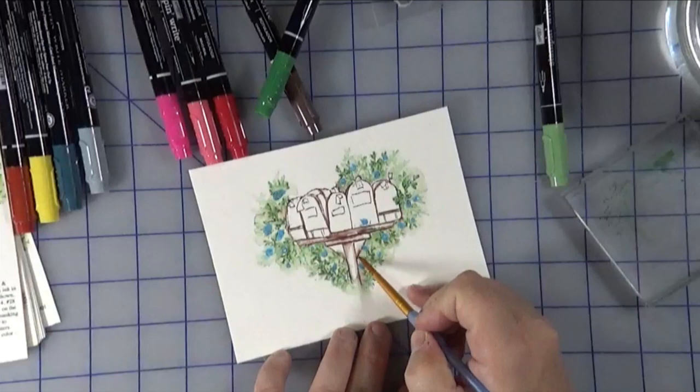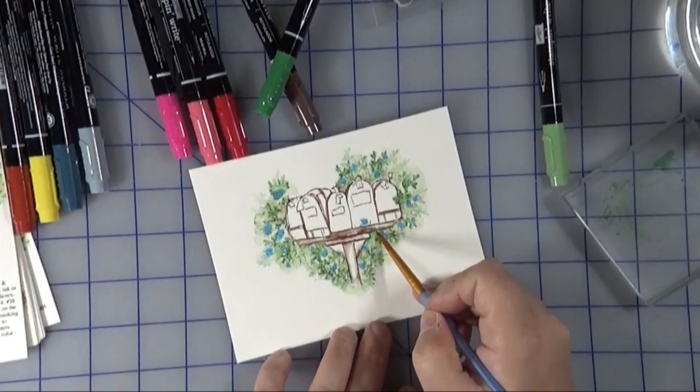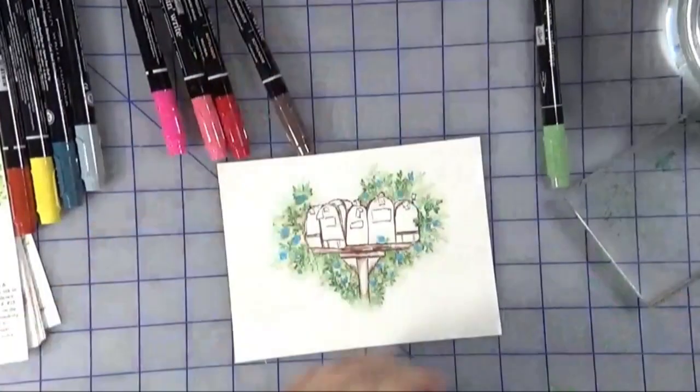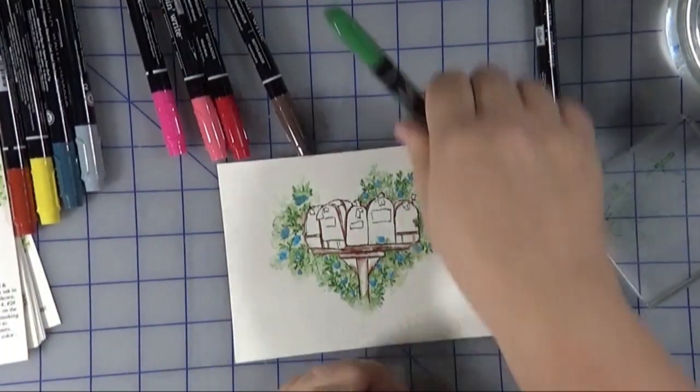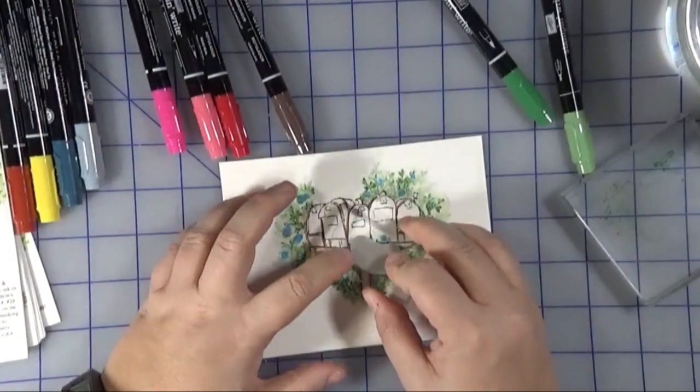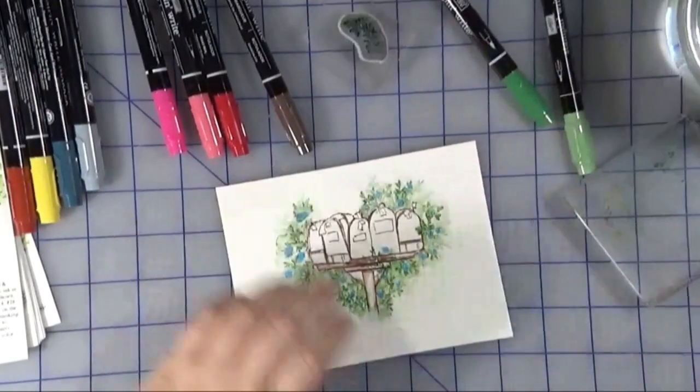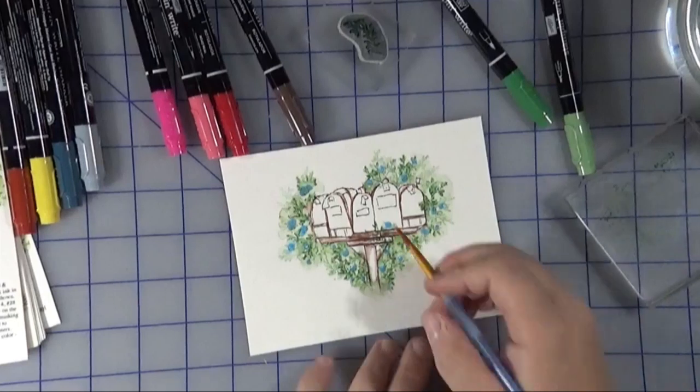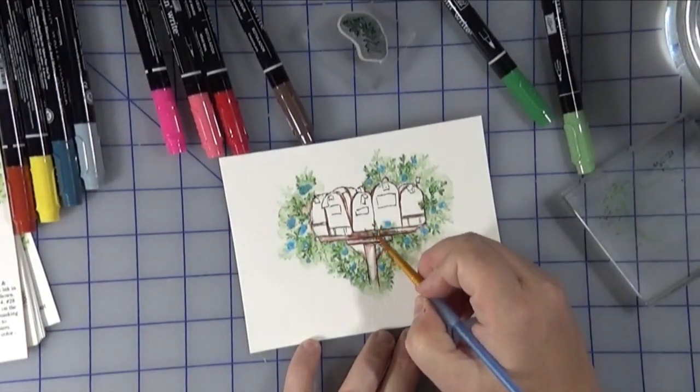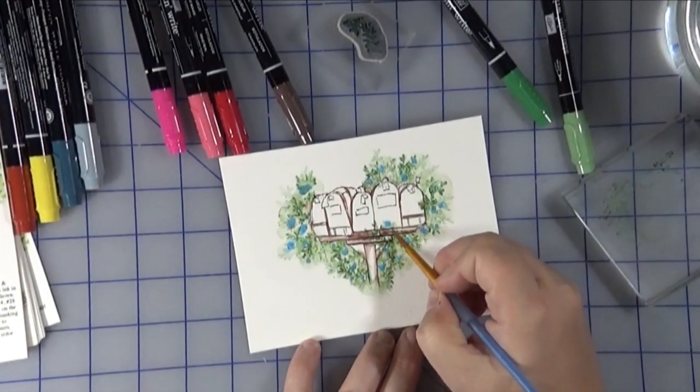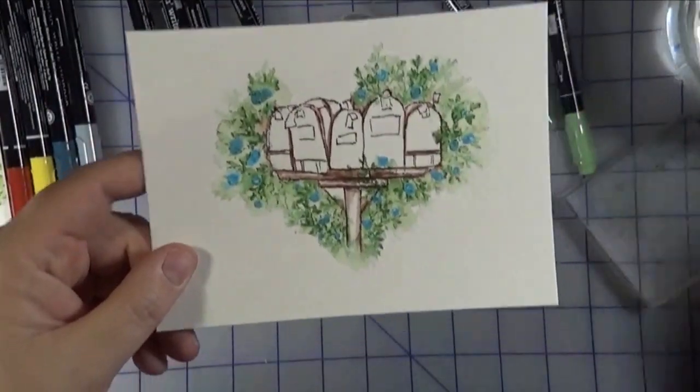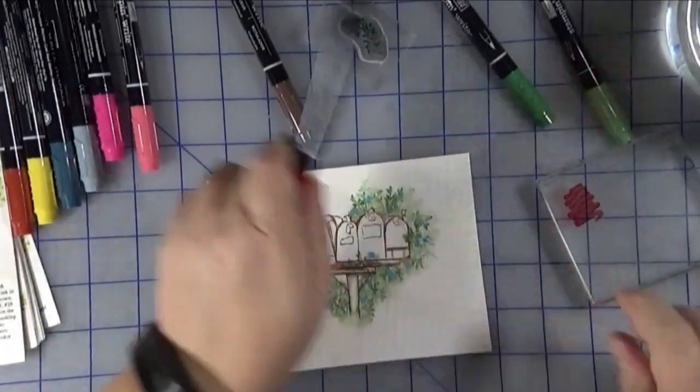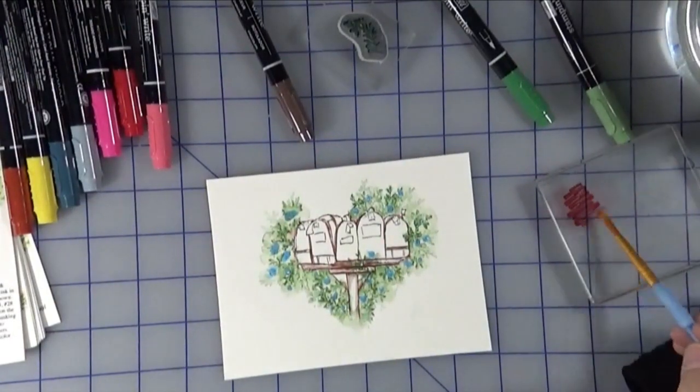I decided that I wanted to have a few more vines going in there, so I just quickly added some. That's the great thing, you can always play with this and change it as you go along. I wanted to have some come up over in front of the mailboxes. Again I got a little bit too much water on there and I just dabbed it away with the microfiber cloth, very easy.